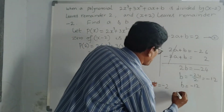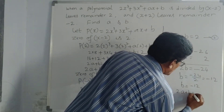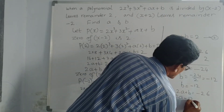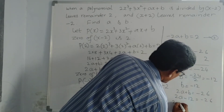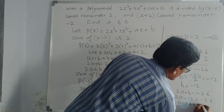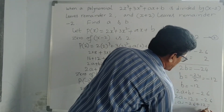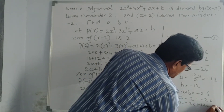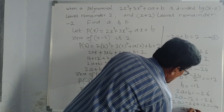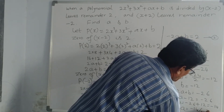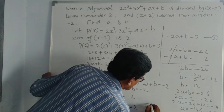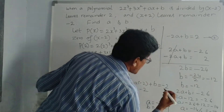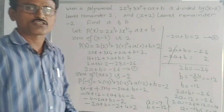2a plus b equal to minus 26. Substitute b equal to minus 12: 2a plus minus 12 equal to minus 26. So 2a equal to minus 26 plus 12, which is minus 14. Therefore a equal to minus 14 by 2, which is minus 7. So in this problem, a equal to minus 7 and b equal to minus 12. This is the answer.